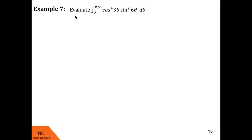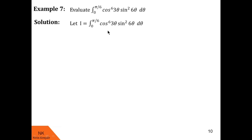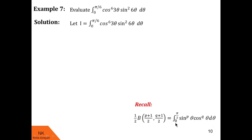In this example, we are asked to evaluate the integral of cos⁶(3θ) · sin²(6θ) dθ over the limit 0 to π/6. We label this integral as I, and since the integrand consists of trigonometric functions, we recall the second form of the beta function: the integral of sin^p θ · cos^q θ dθ from 0 to π/2 equals half · beta((p+1)/2, (q+1)/2). We compare integral I with this form.